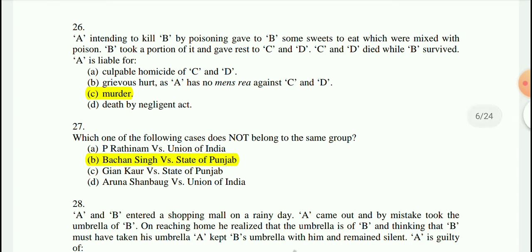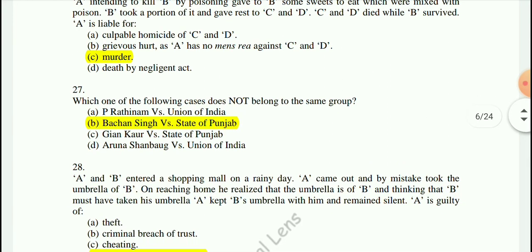Question 27: Which one of the following cases does not belong to the same group? The answer is Bachchan Singh vs. State of Punjab, because Gyan Kaur, Aruna Shanbaug, and P. Rathinam are all related to the right to die under Article 21.